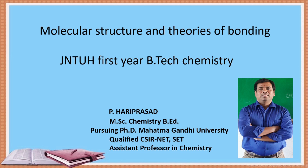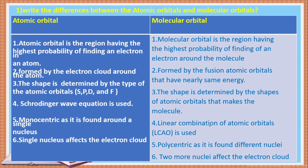We will discuss what is atomic orbital, what is molecular orbital, and what are the differences between atomic and molecular orbital. This is a very important question from the JNTU examination point of view. Atomic orbital is the region having the highest probability of finding an electron in an atom.